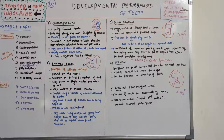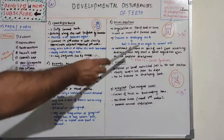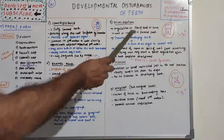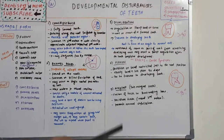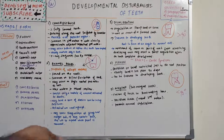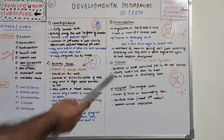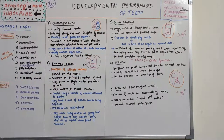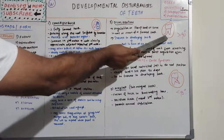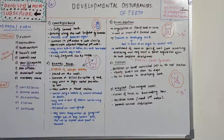Next we have dilaceration. Dilaceration is a bending of the root — an angulation or sharp bend or curve in the root or crown of a formed tooth. It occurs due to trauma to the developing tooth, which causes the root to form at an angle to the normal axis.